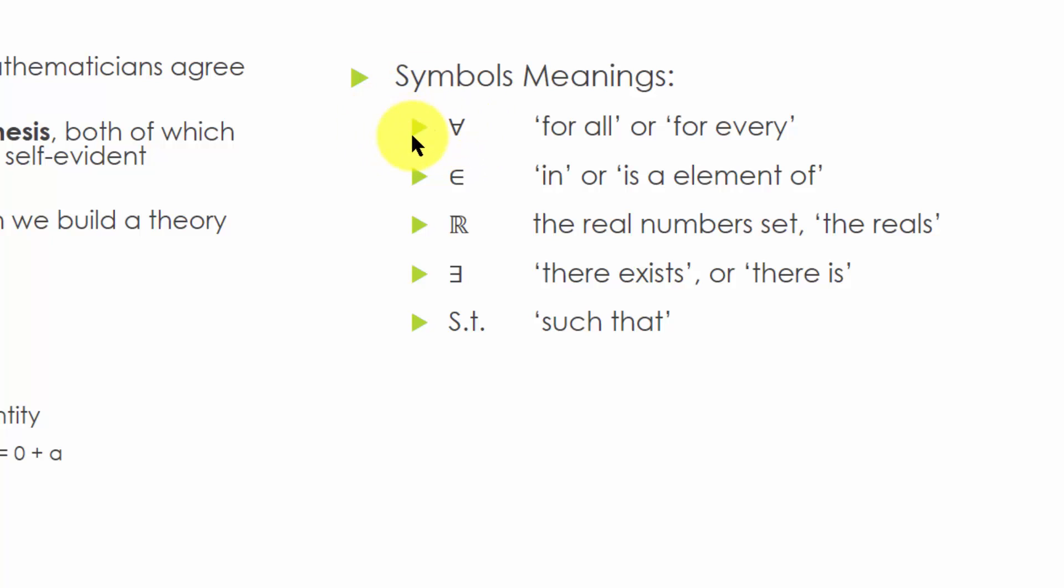Upside down a means for all or for every. The set membership symbol means in or is an element of. The big R represents the real numbers set. The reversed e means there exists or there is.